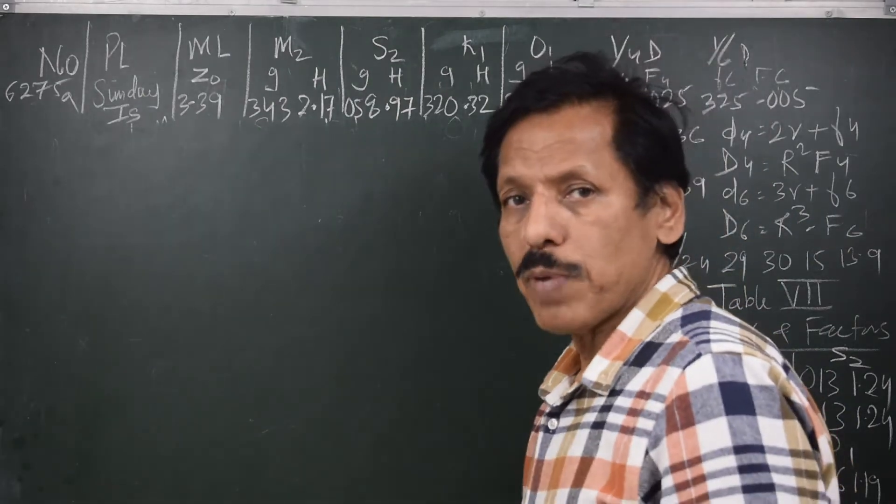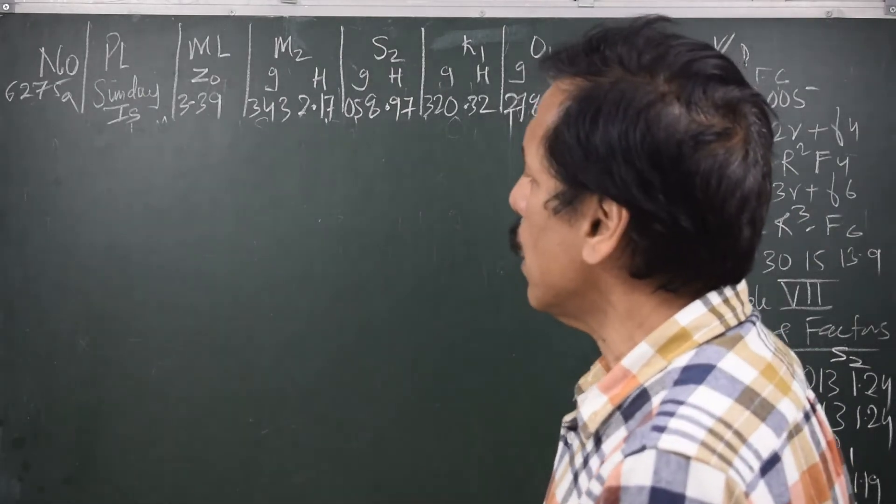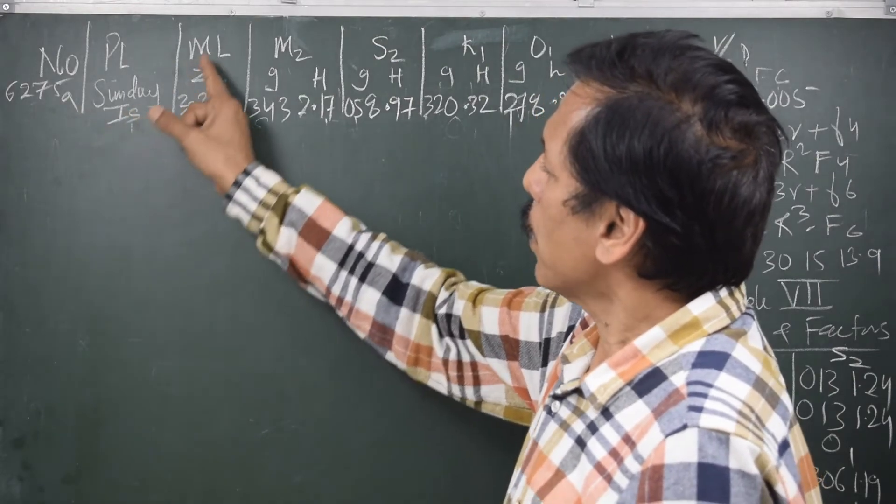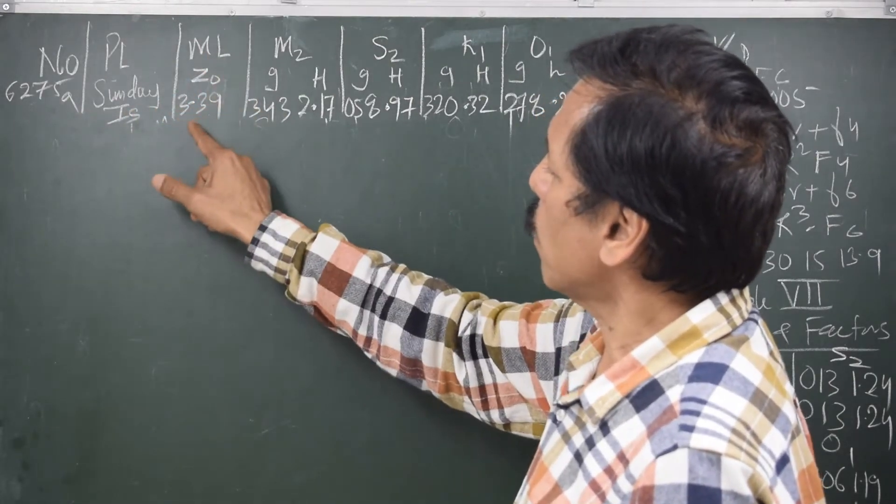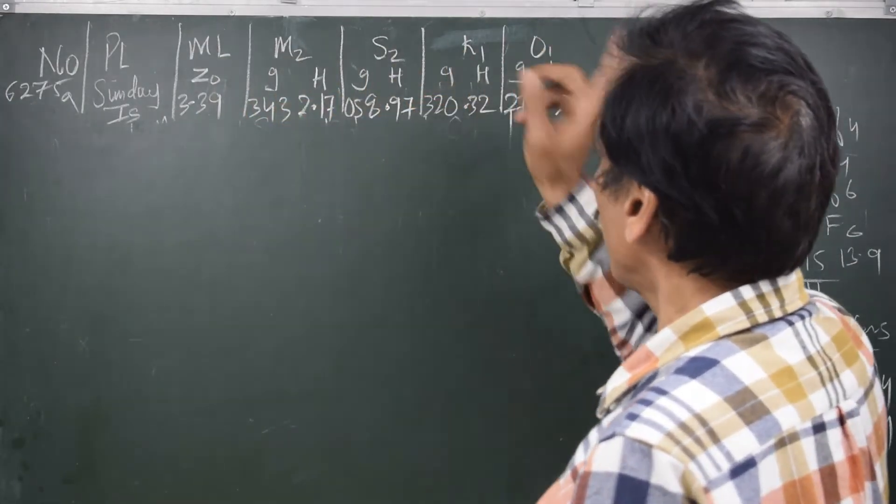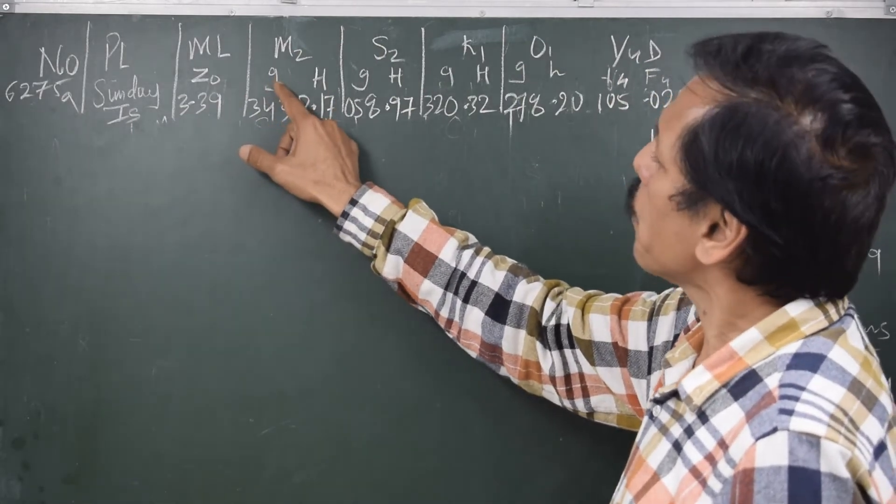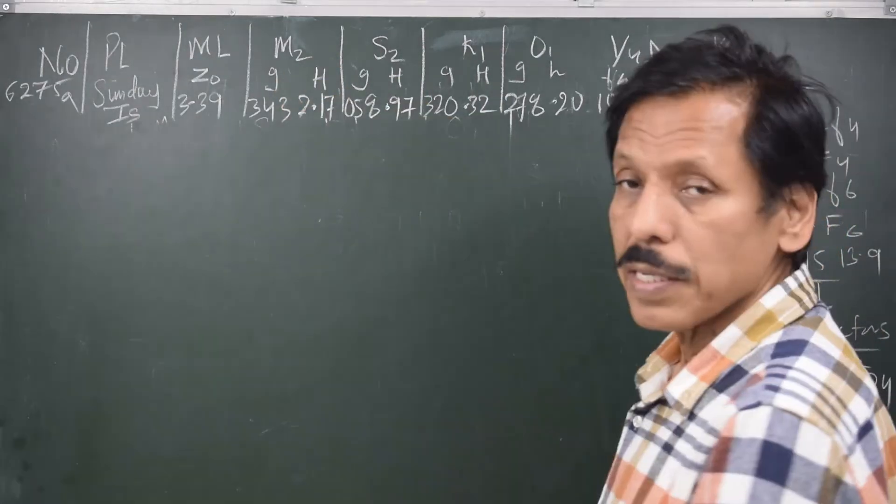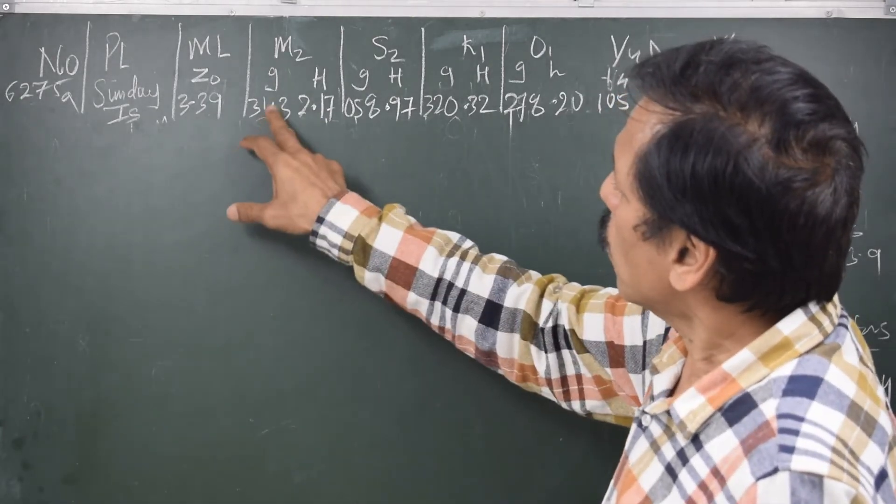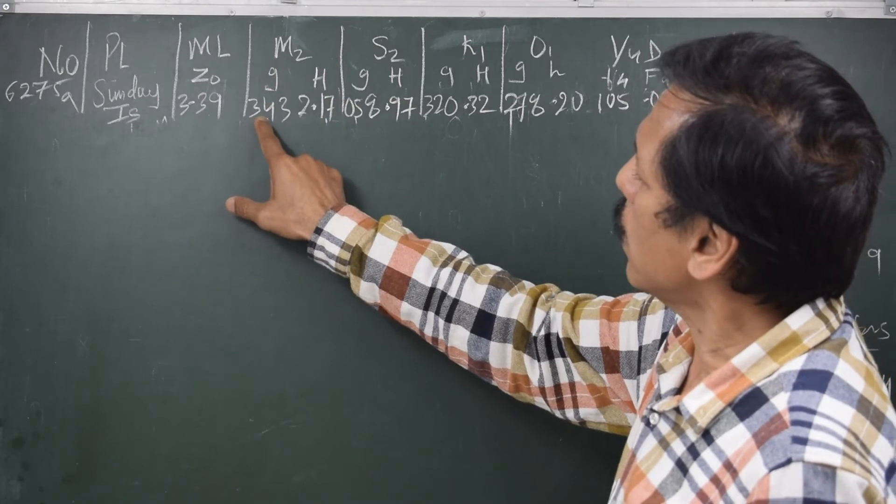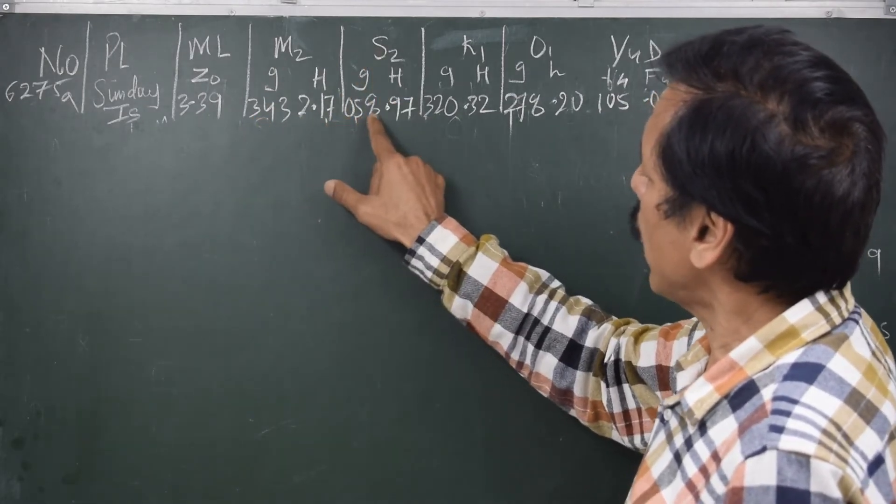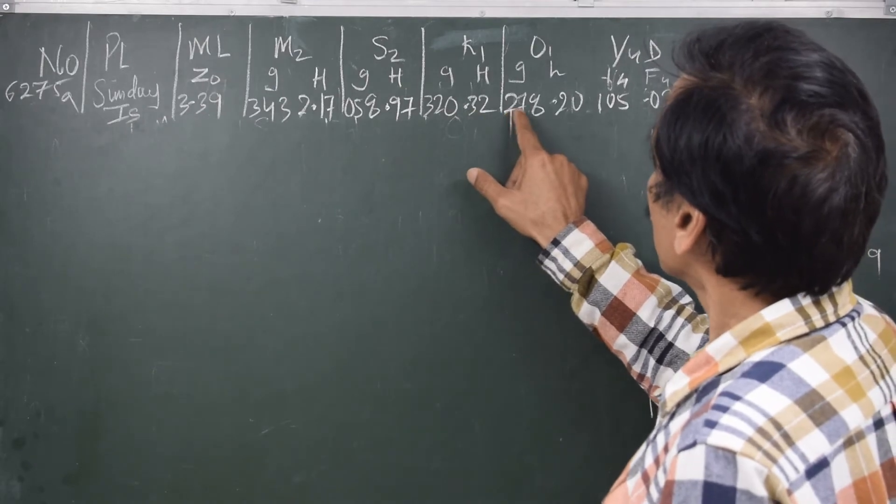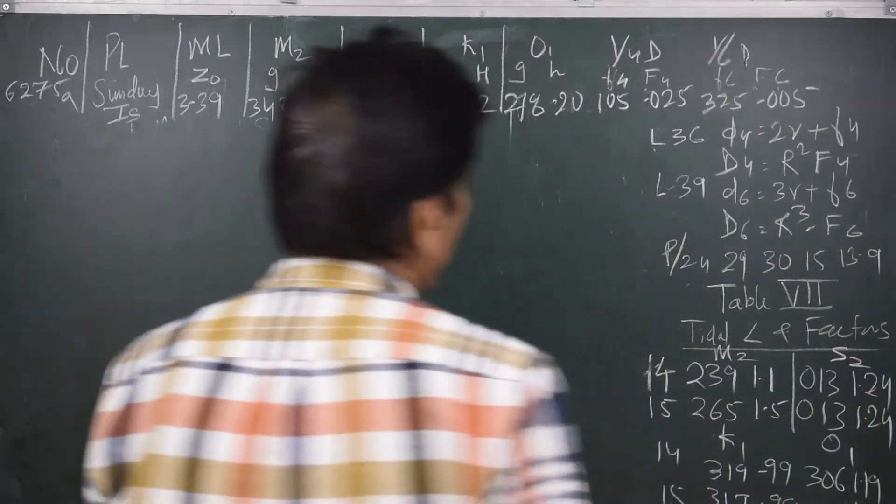If we go to part 3, you will find number 6275A for Sunday Island. We have mean level z0 of 3.39. M2, S2, K1, and O1 are four partial tides for which g and h, g in degrees and h in meters, are given. h is amplitude and g is the phase lag compared to the Greenwich meridian. For M2: 343 degrees, 2.17 meters. For S2: 058 degrees, 0.97. K1: 320 degrees, 0.32 meters. O1: 278 degrees, 0.20.